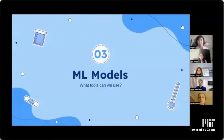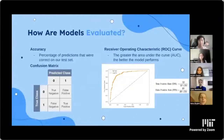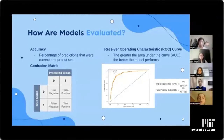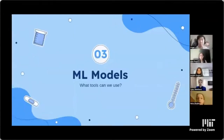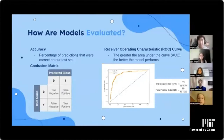We evaluated models using accuracy, confusion matrices, and the ROC curve — specifically the AUC, which we wanted to maximize. The models we tried were K-means clustering — which could not achieve accuracy higher than 53% because the images aren't easily clusterable — and random forest. Random forest uses a combination of multiple decision trees, and using randomized search CV to find the best parameters, we ended up with an average accuracy of 83%.